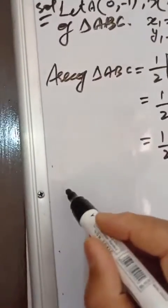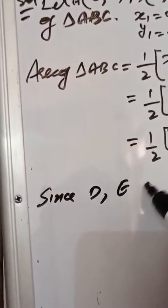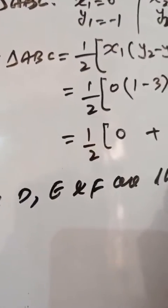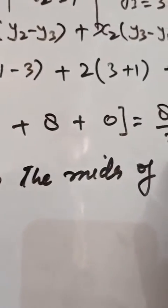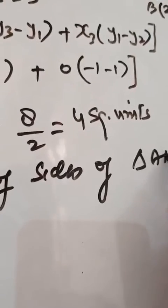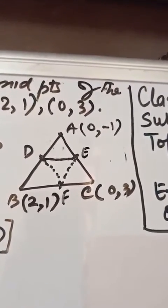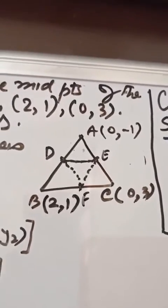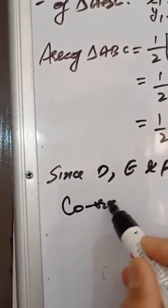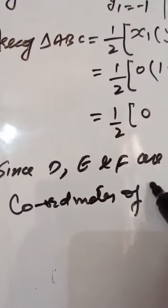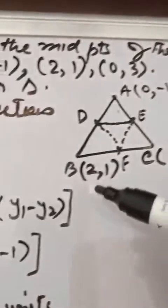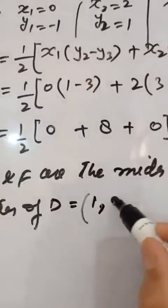Since D, E, and F are the midpoints of the sides of triangle ABC, we use the section formula special case. The coordinates of D, the midpoint of AB, using midpoint formula is ((x1 + x2)/2, (y1 + y2)/2) = ((2 + 0)/2, (1 + (-1))/2) = (1, 0).